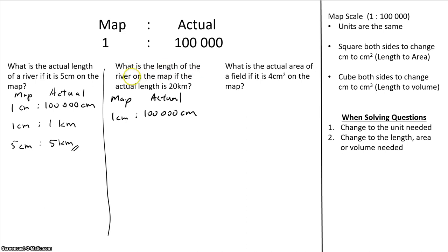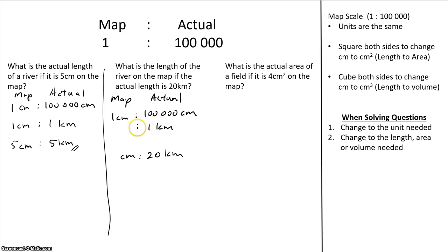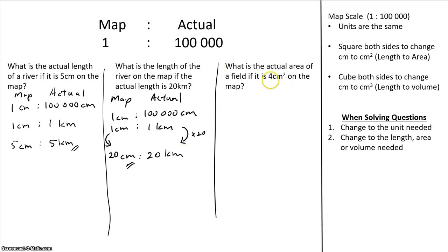The next question asks for the length of the river on the map if the actual length is 20 km. So the actual side is 20 km and we need to find the map length in cm. Again, change units first: 100,000 cm equals 1 km. Then multiply both sides by 20, giving 20 cm on the map.